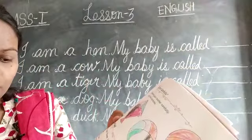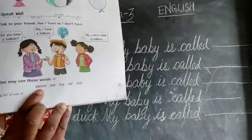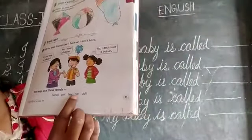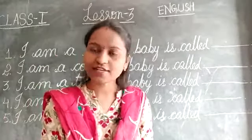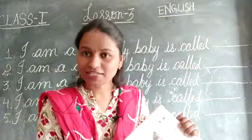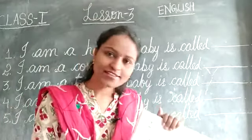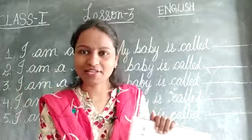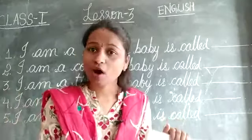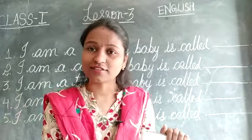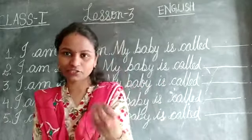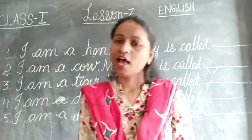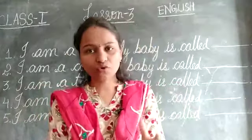You have these words: pencil, pet, toy, car, doll. I will tell you three examples. You have to create your own sentences with these words. Do you have a pencil? Yes, I have an Apsara pencil. No, I don't have a pencil. This is the three types, children — like three friends are there, you can speak with them.